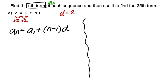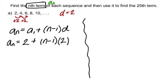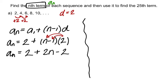We just fill in what we know. a sub n is equal to my first term, a sub 1, which is 2, plus n minus 1 times my common difference, which is also 2. You could leave your formula just like this, or simplify it if you wish. Distributing gives us 2 plus 2n minus 2.